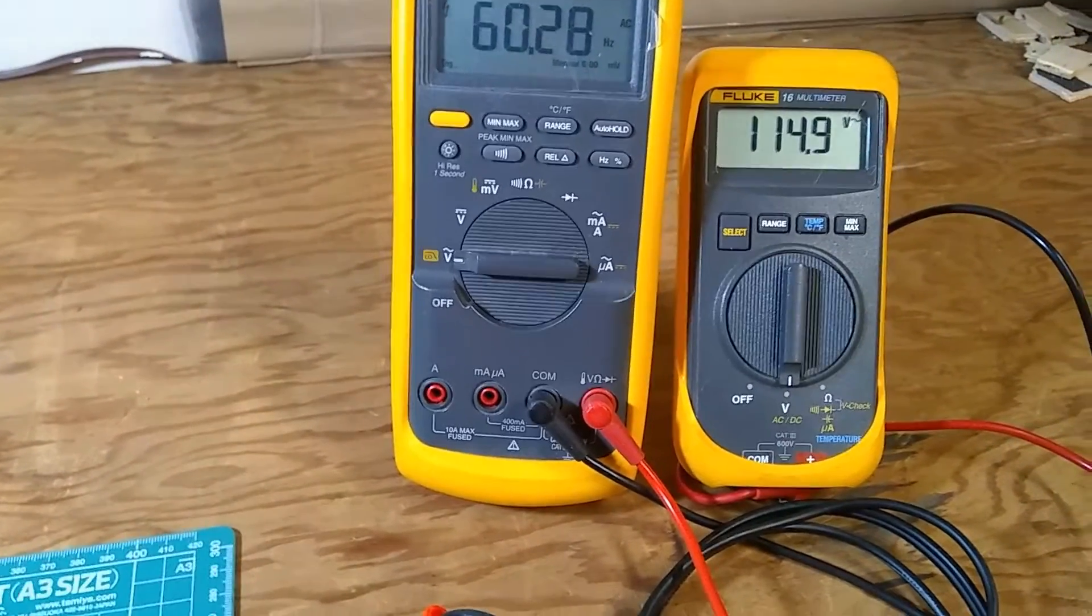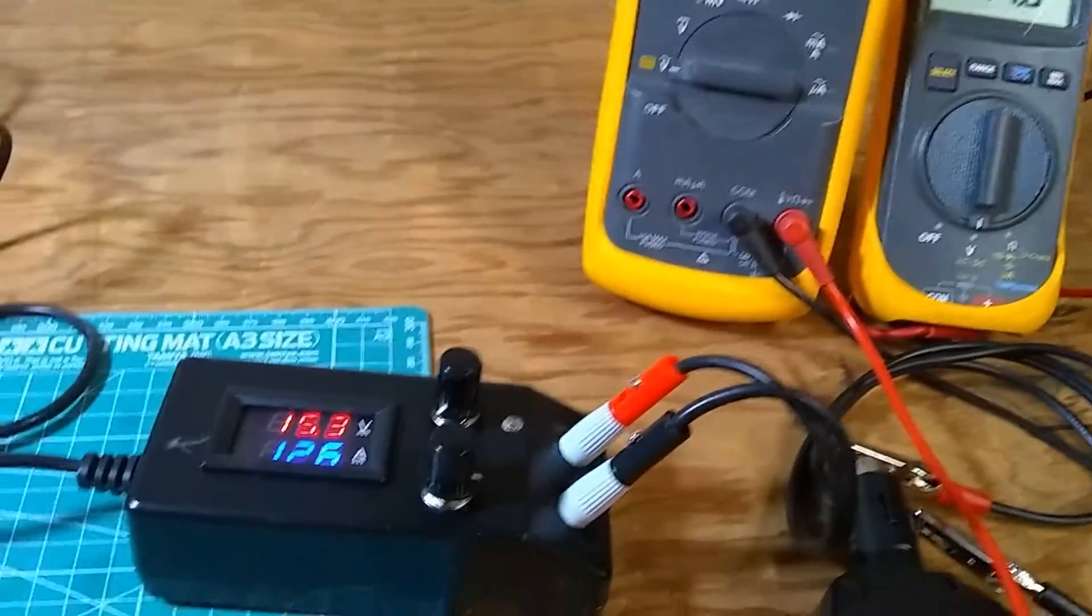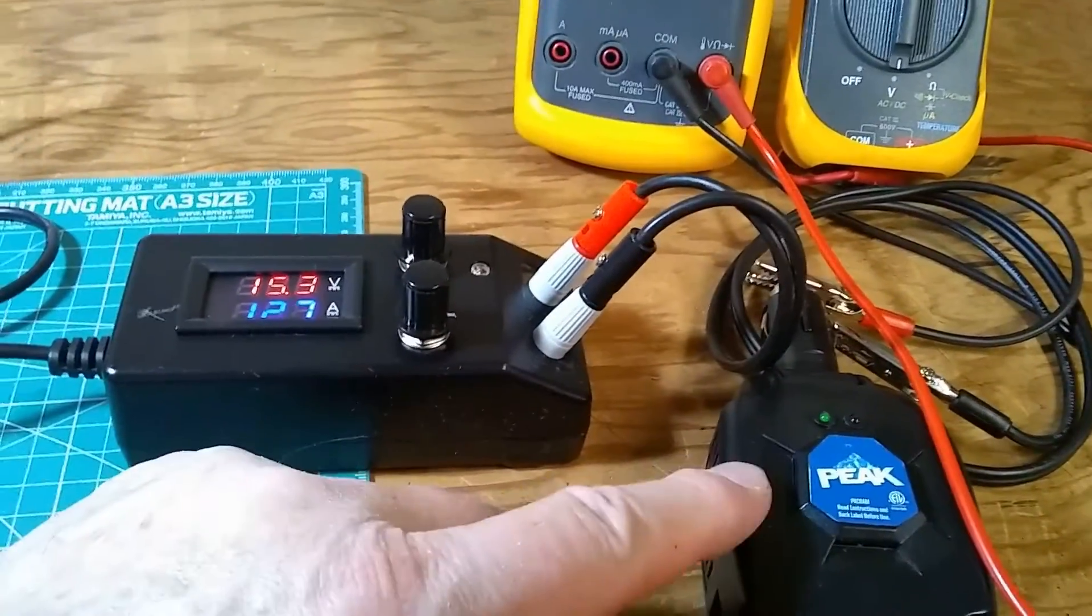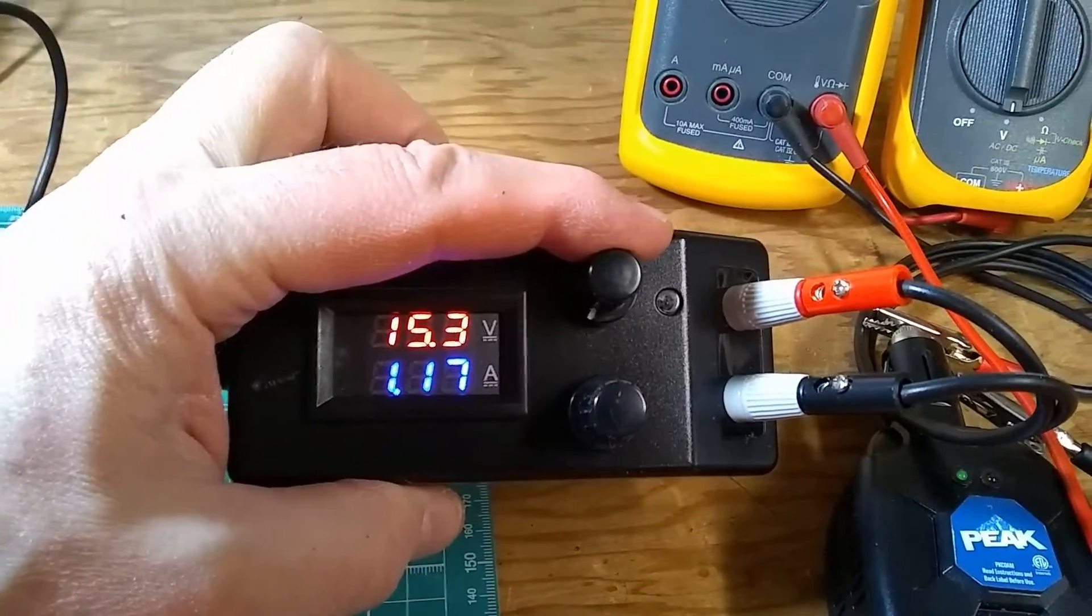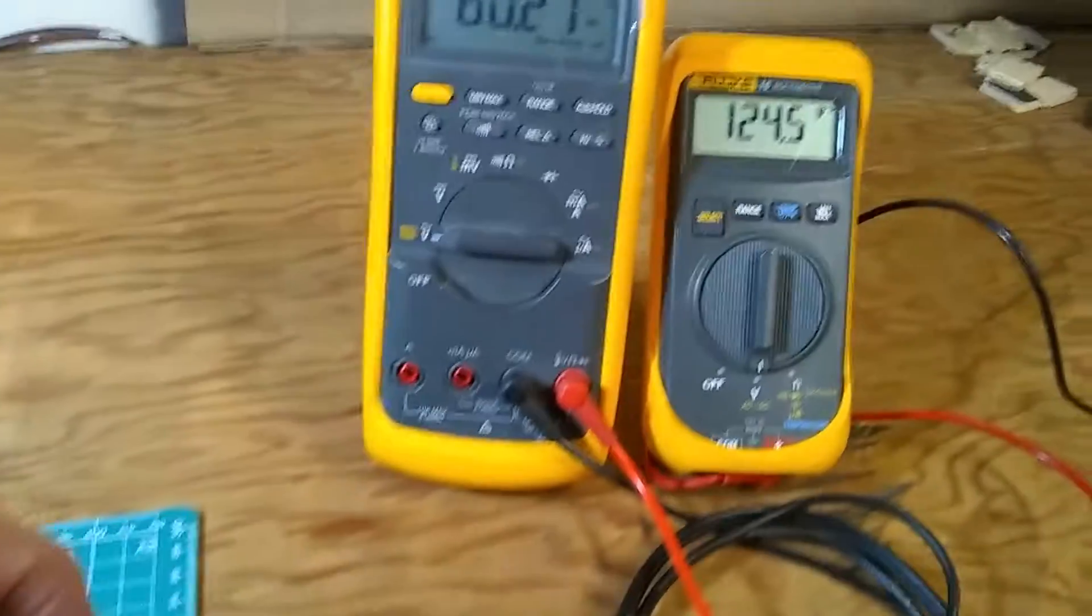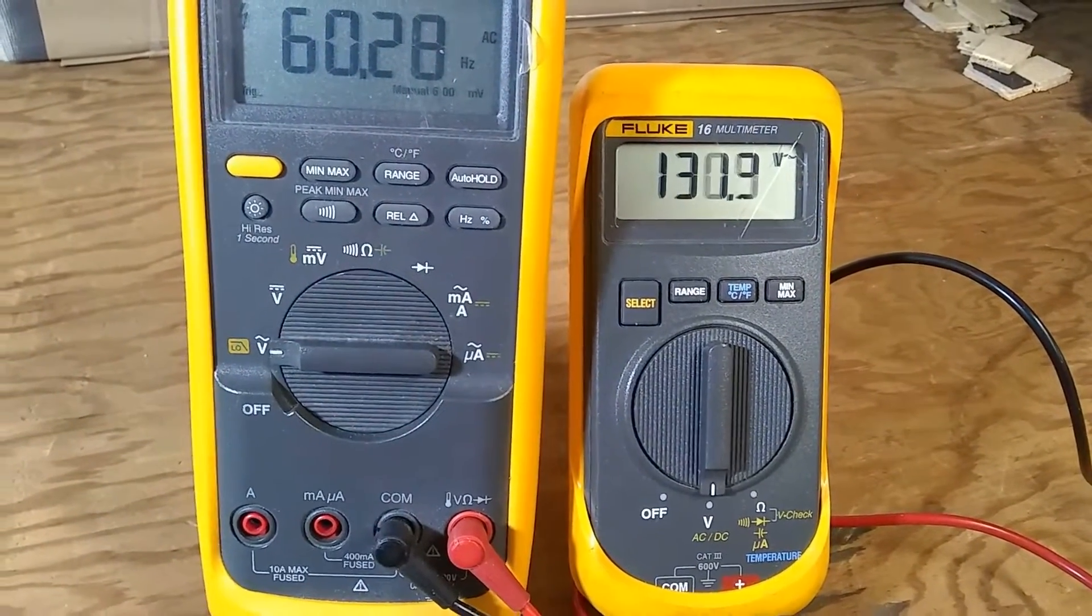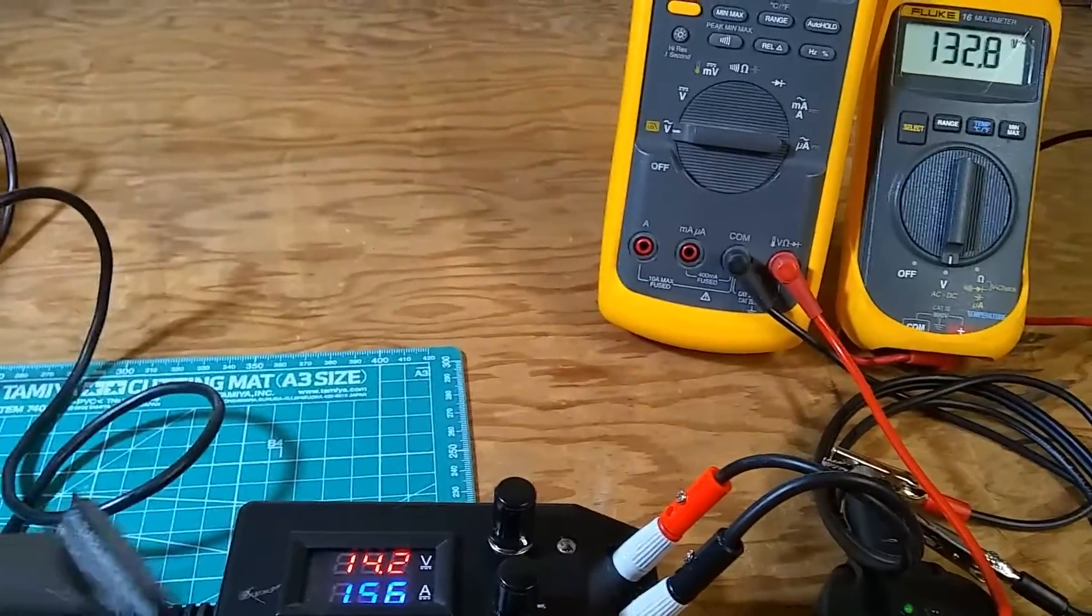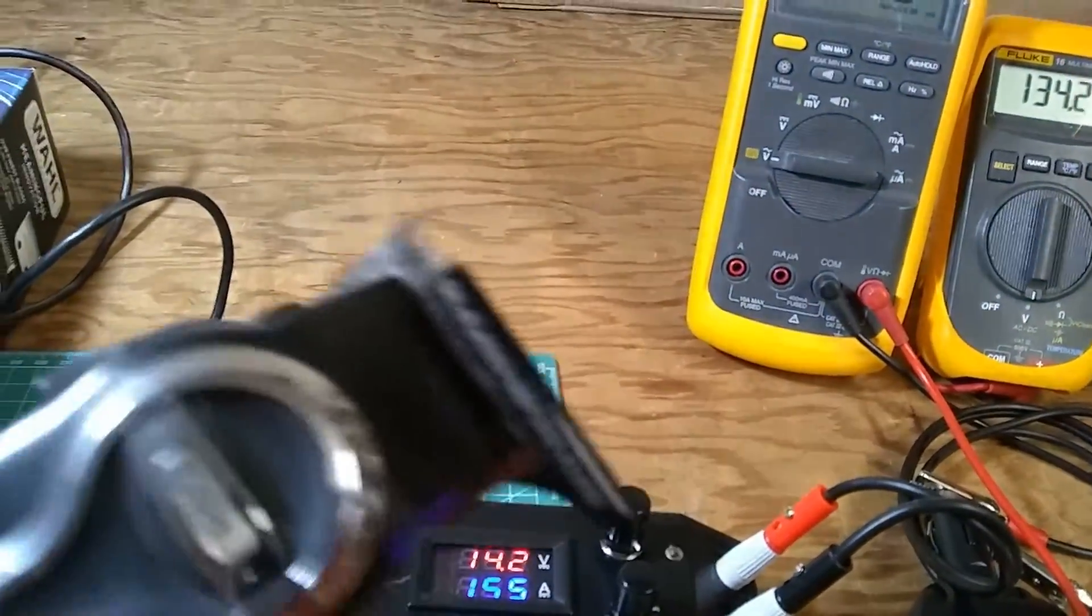But what happens if I lower the voltage? Because that contraption is supposed to work on 12 volts, but if I lower the voltage down, the output goes up and up. I don't want to go too high. Now the clippers make horrible noise—the voltage is way too high for the clippers.